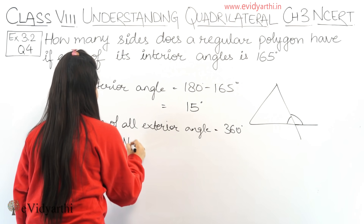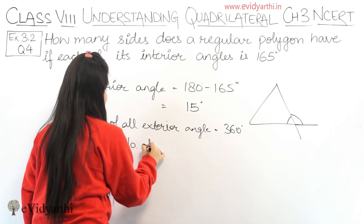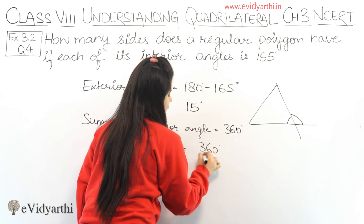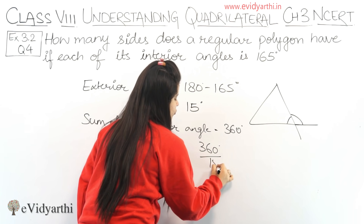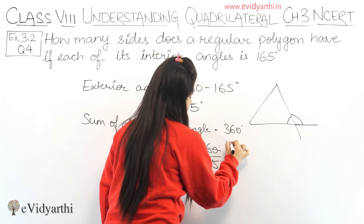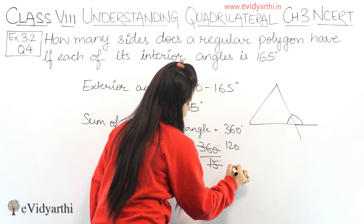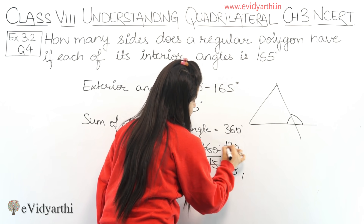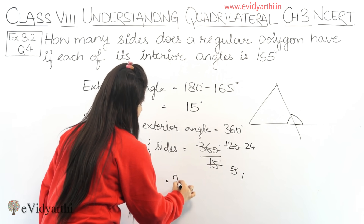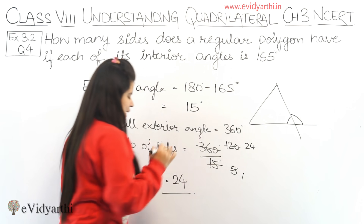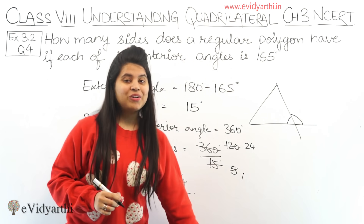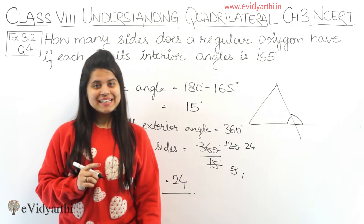So the number of sides will be 360 degrees divided by 15 degrees, which equals 24. So the number of sides is 24. This was question number 4. Now let's move on to the next question.